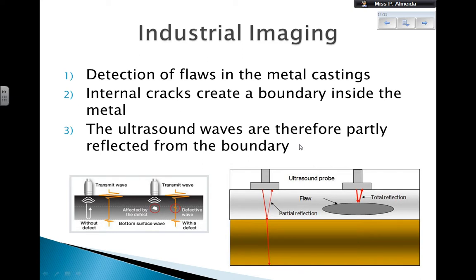Ultrasounds can also be used in industry for industrial imaging — specifically to detect flaws in metal castings. Internal cracks create a boundary inside the metal, so ultrasound waves are partially reflected from that boundary. Here I have an example: the ultrasound probe scans the metal, and if there is a flaw, instead of a clean signal going in and coming back, you get a disturbance in the signal showing that something has been reflected internally. And because ultrasound can be used to find distances, you can pinpoint the exact location of the flaw.